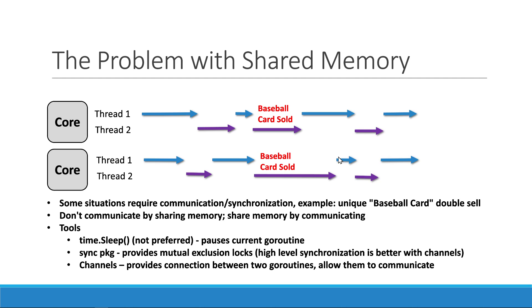Here's one of the problems we may run into any time you need to share memory. If your situation requires synchronization — say we have a unique baseball card, there's only one of this card — if this thread and this other thread aren't communicating and they both sell the baseball card at the same time, we're going to have an issue. We have a double sell and only one card, and that is a problem. In some situations communication is going to be necessary, and we'll cover more of that in the next couple videos.